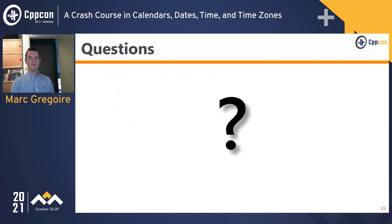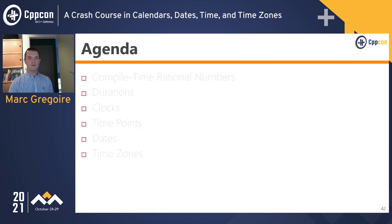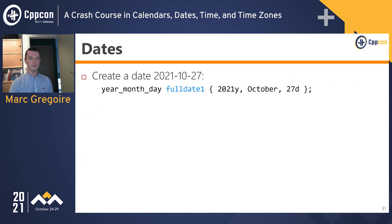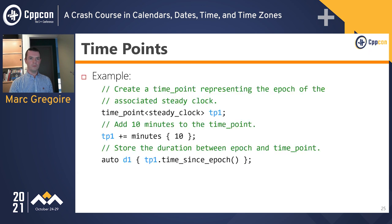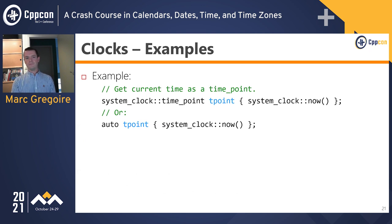That's all I wanted to cover today. Regarding the question about a.m. and p.m. in Chrono: the standard user-defined literal h does not know the concept of a.m. or p.m., so there is no equivalent like 9h_am.